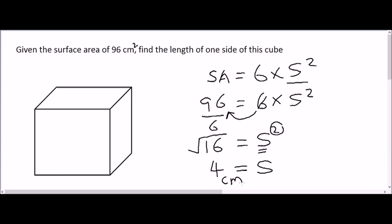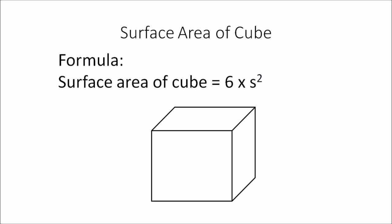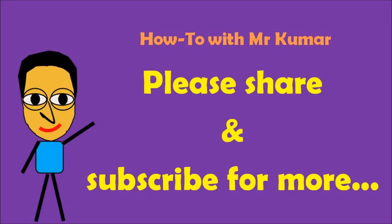Just to recap: the formula to calculate the surface area of a cube is 6 multiplied by s squared. We use 6 because a cube has six faces, and 's' is one of the side lengths of the cube. Thank you very much for watching — please share and subscribe for more.